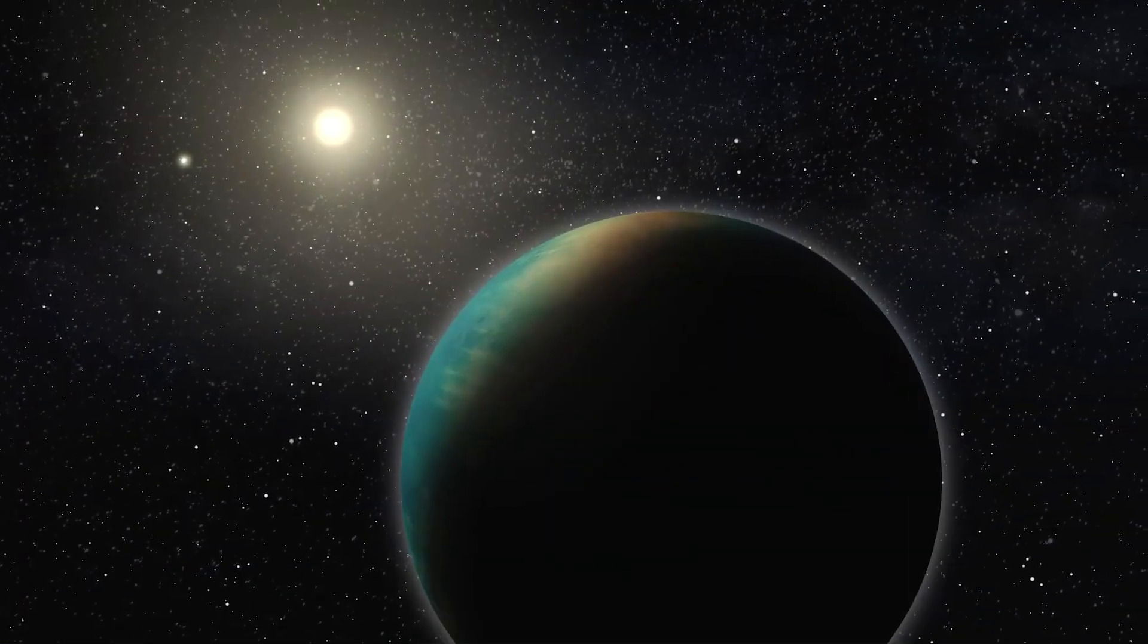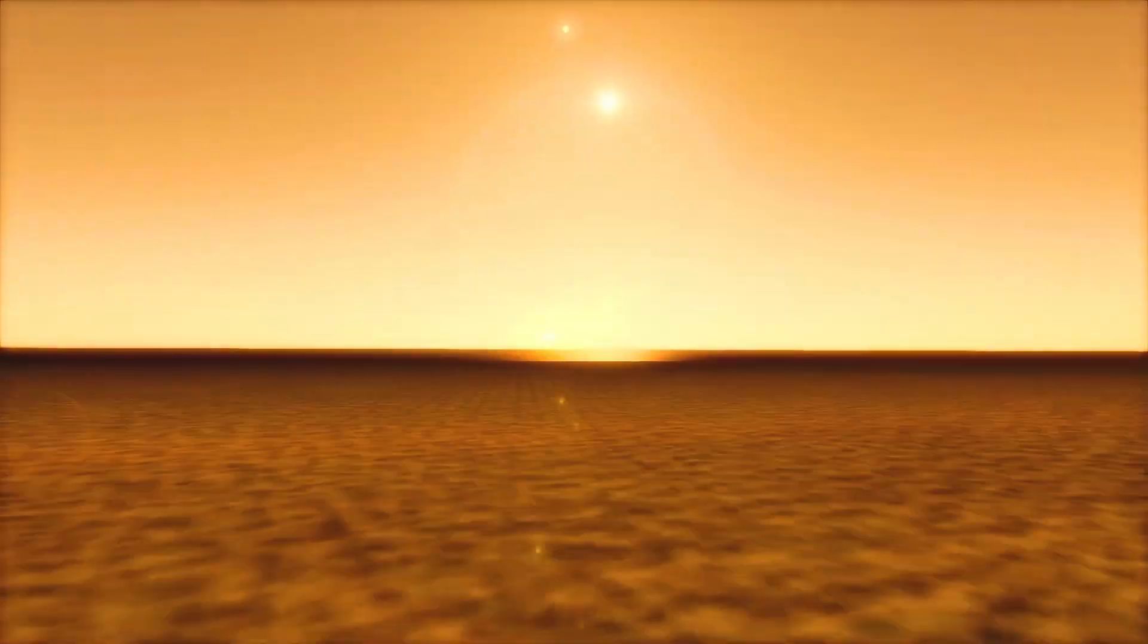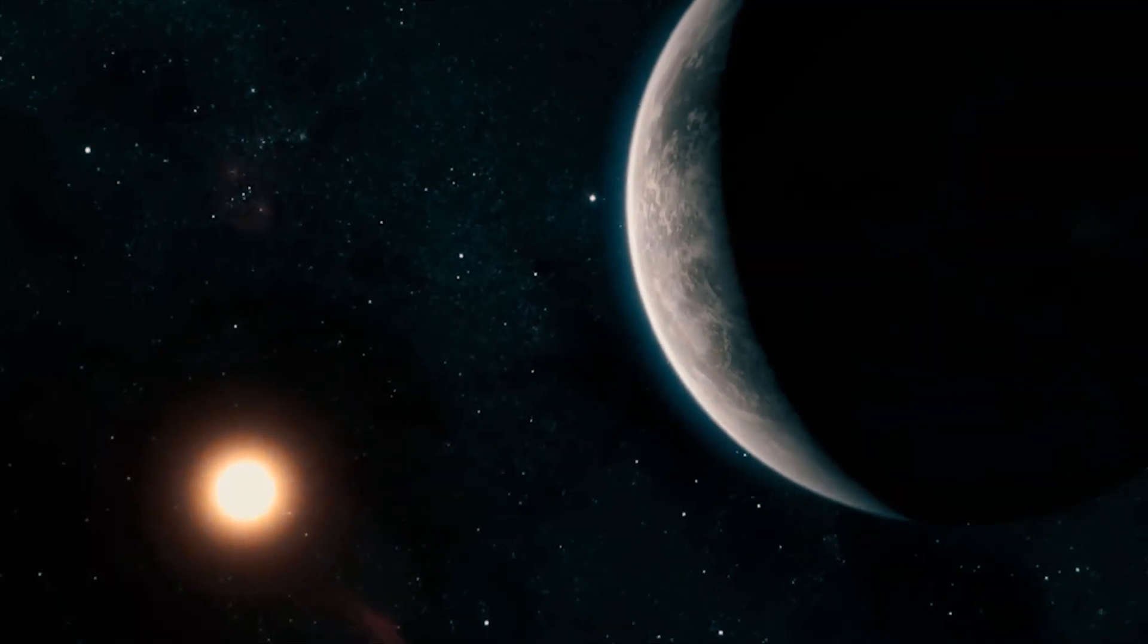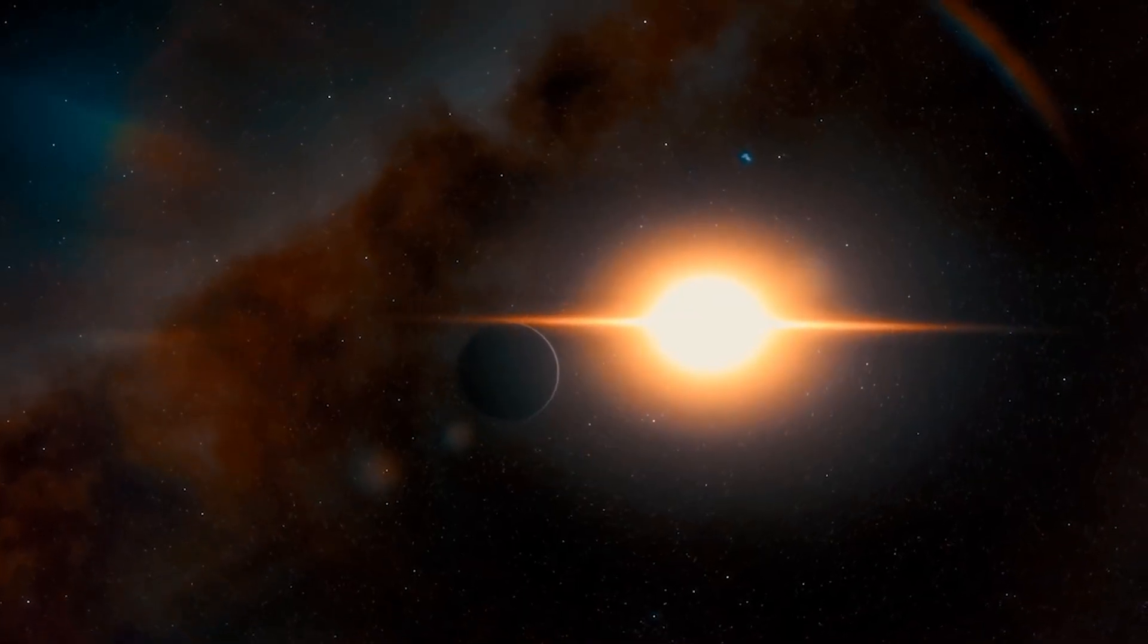This planet, TOI-1452b, receives a similar amount of light from its star as Venus does from our Sun because the red dwarf star is smaller and cooler than our Sun. The team of researchers concluded that since the exoplanet is found to receive modest irradiation, it can be a good candidate for water world.